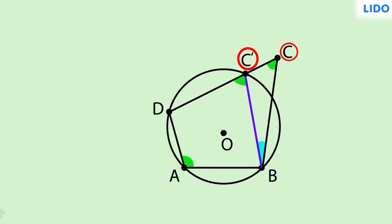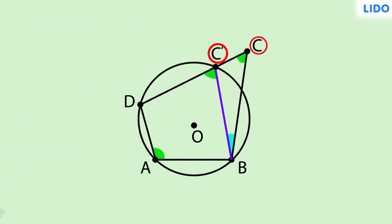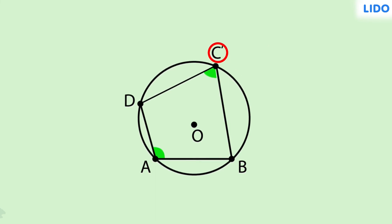So from this, we can conclude that point C lies on a circle and A, B, C, D is a cyclic quadrilateral.